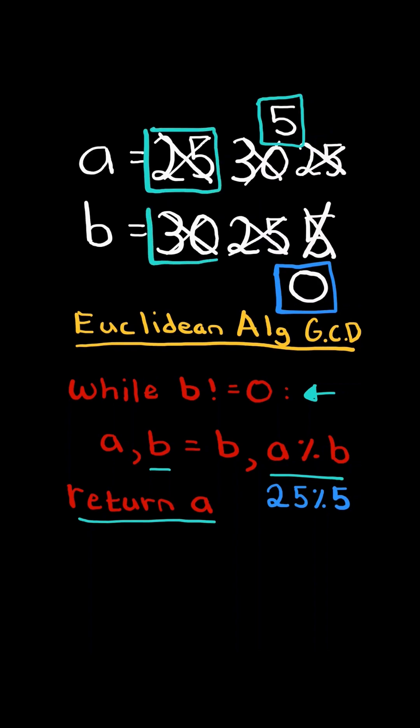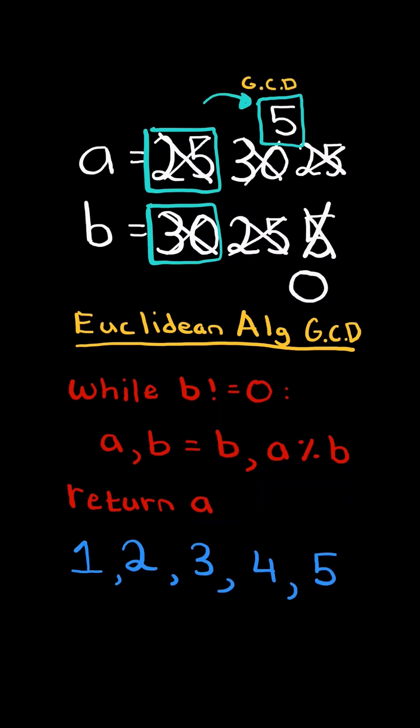Now the common factors of a and b are exactly the common factors of the greatest common divisor. So all we need to do is iterate from 1 up to the greatest common divisor, and find all the factors of the greatest common divisor.